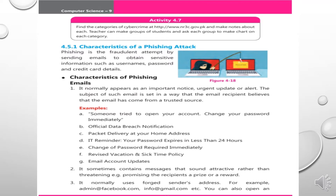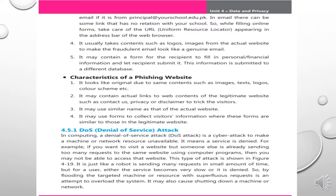The second characteristic is that it sometimes contains messages that sound attractive rather than threatening, like promising the recipient a prize or reward. The third characteristic is that it normally uses a forged sender's address, for example, admins@facebook.com or info@gmail.com. You might also open an email appearing to be from principal.yourschool.education.pk, but the links inside have no relation to your school. So while filling out online forms, take care of the URL appearing in the address bar of the web browser.